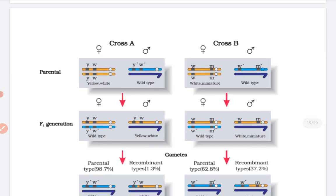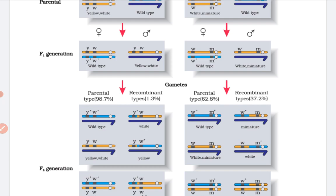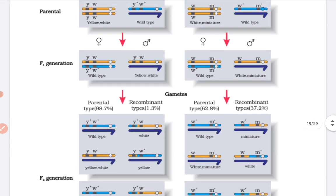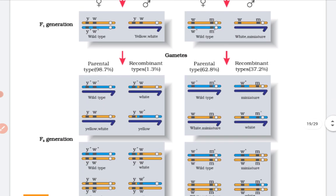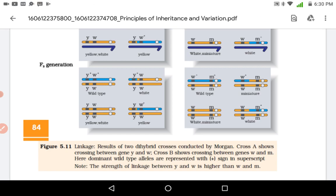This diagram shows the crosses between A and B. In the parental generation and F1 generation, wild type and yellow appeared. These are the gametes. In cross A, the recombinant type is 1.3% and parental type is 98.7%. In cross B, the parental type is 62.8% and recombinant is 37.2%. In F2 generation, yellow, white-yellow, and white-miniature combinations were obtained. Cross A shows crossing between genes Y and W, and cross B shows crossing between W and M, with dominant wild-type alleles represented by a plus sign.